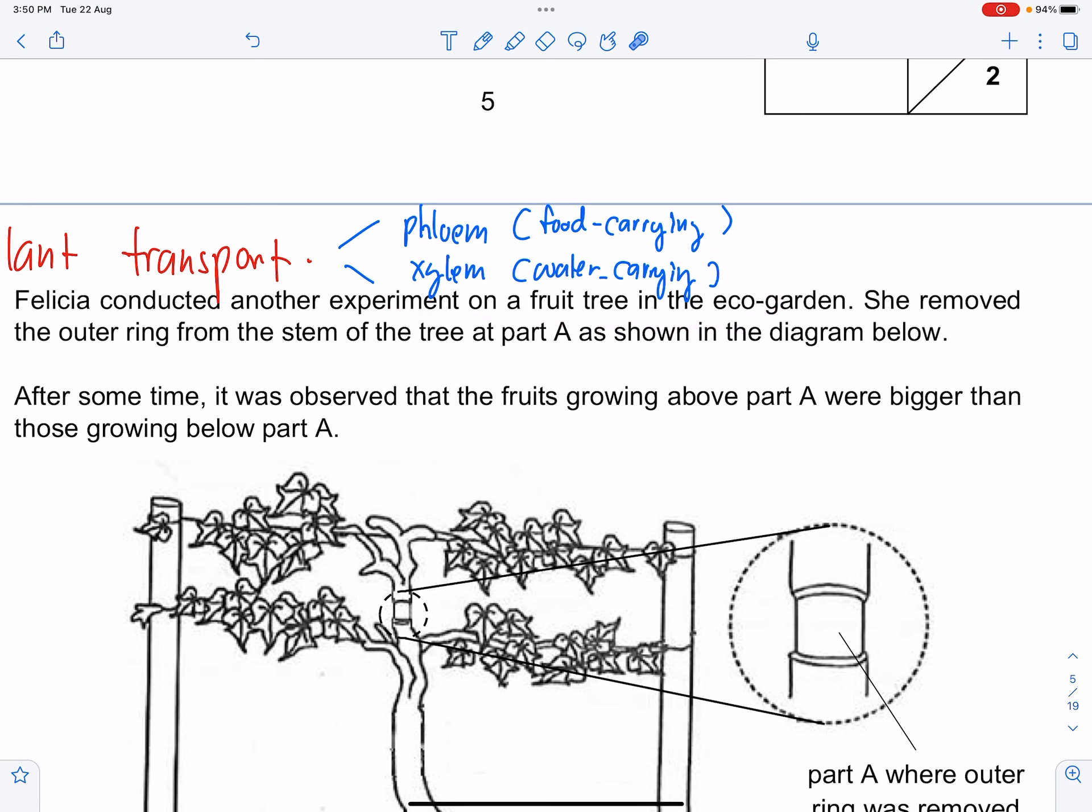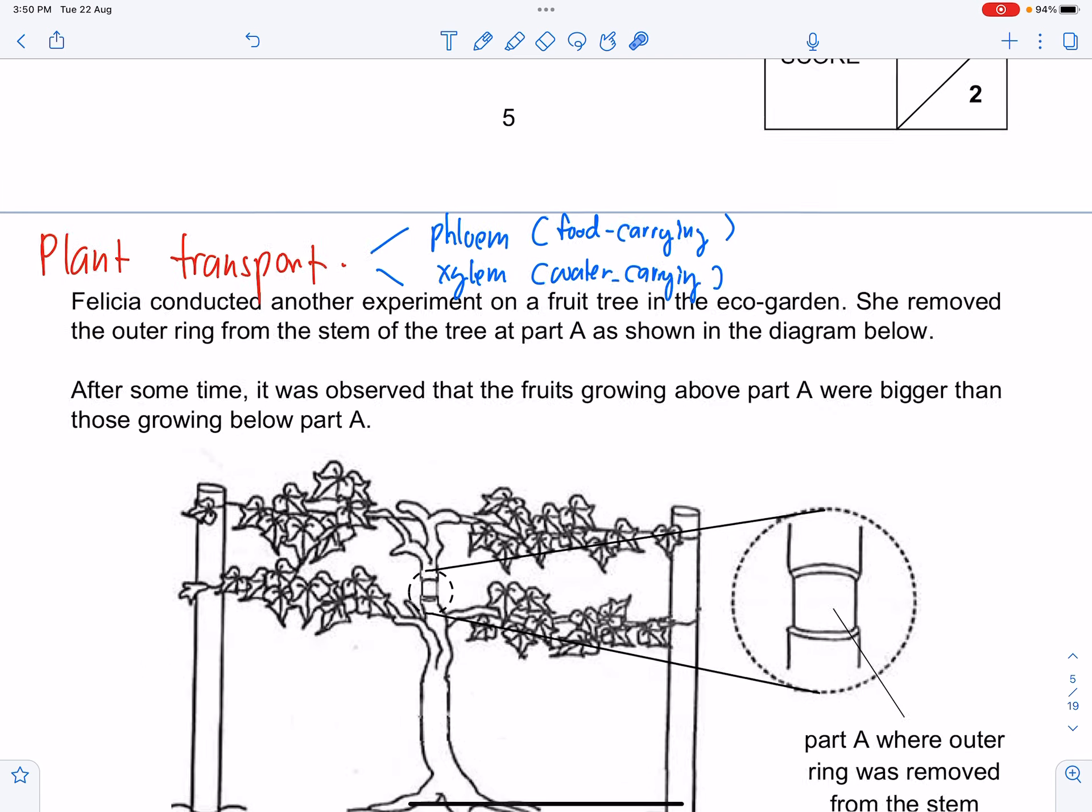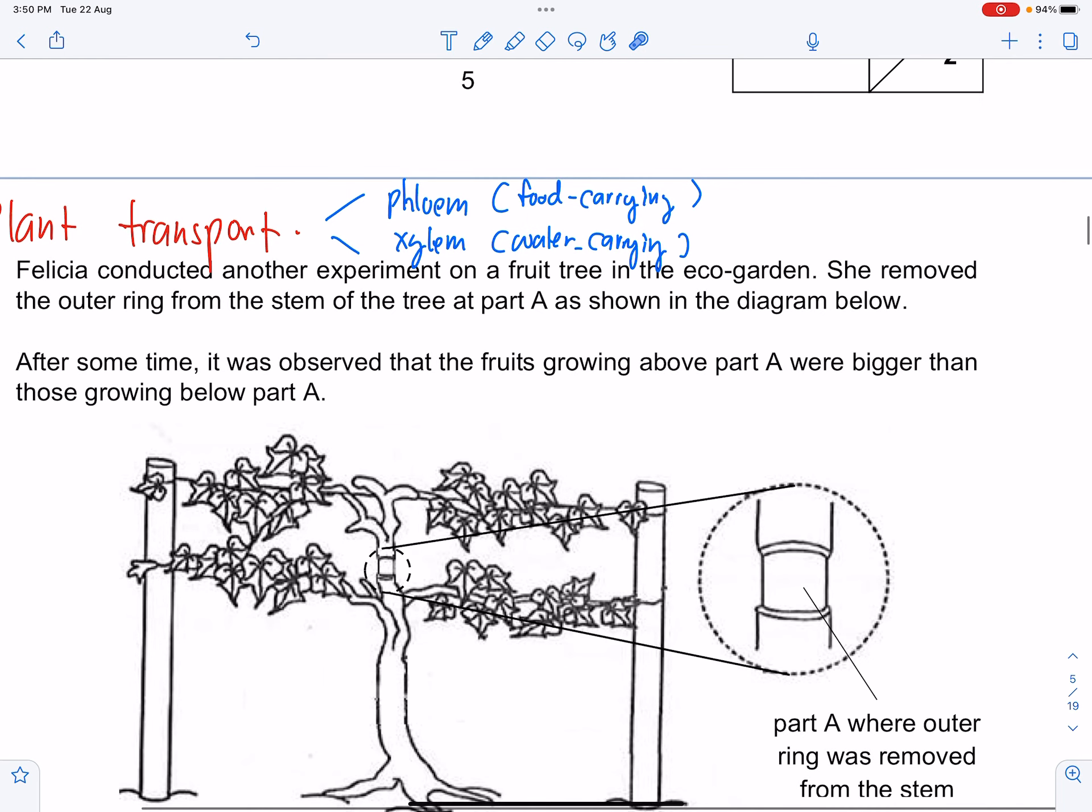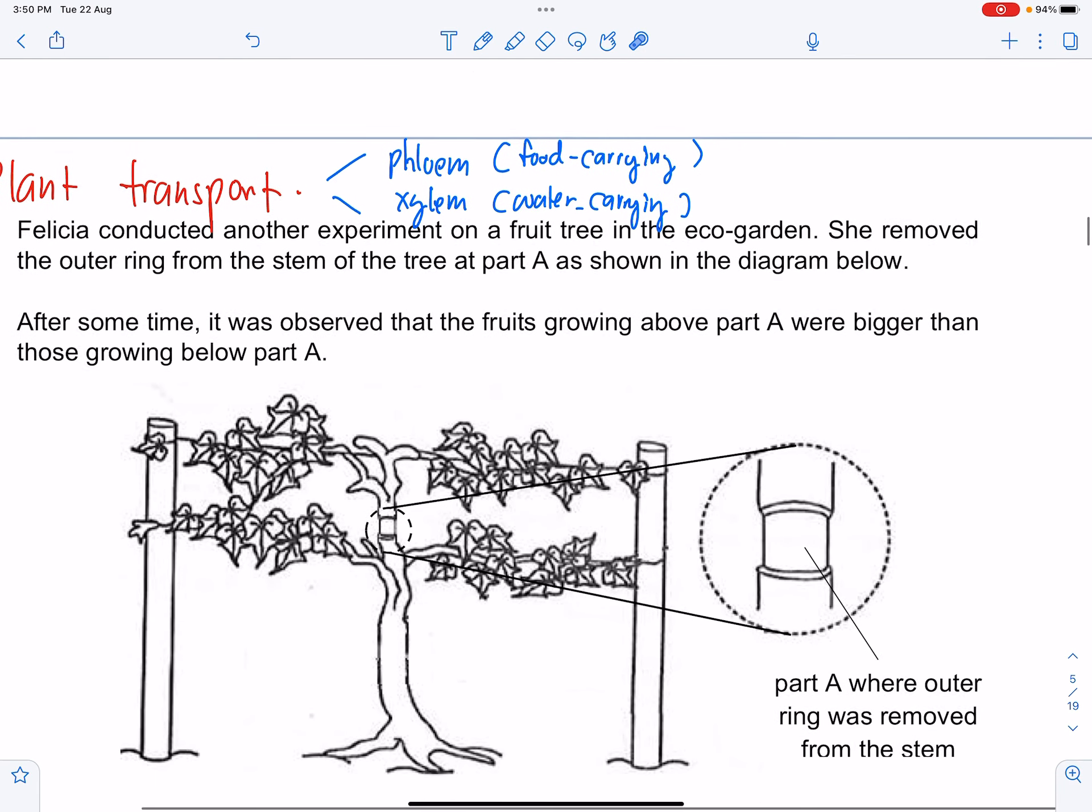Your xylem carries water. Water is required for photosynthesis. If your xylem gets affected in any way, your rate of photosynthesis will also be affected. So let's take a look at this question.